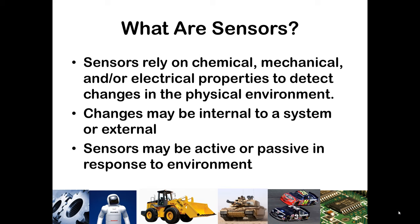Sensors can be active or passive in response to the environment. An active sensor generally has to seek out the information it is trying to measure by sending a signal or doing something to place itself in position to collect such data. It may also be passive — just a device in line with the circuit that automatically changes because of its own internal properties as changes are detected.